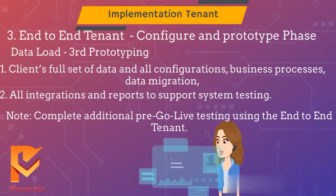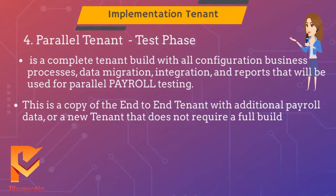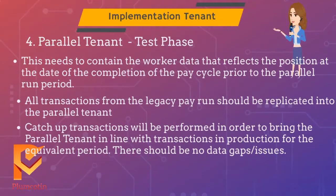The end-to-end tenant is a comprehensive build that includes the client's full set of data and all configurations, business processes, data migration, integrations, and reports. Parallel tenant will be used for parallel payroll testing. This is a copy of the end-to-end tenant with additional payroll data, or a new tenant that does not require a full build. The parallel tenant needs to contain the worker data that reflects the position at the date of the completion of the pay cycle prior to the parallel run period. All transactions from the legacy pay run should be replicated into the parallel tenant. Catch-up transactions will be performed to bring the parallel tenant in line with transactions in production for the equivalent period. There should be no data gaps or issues.